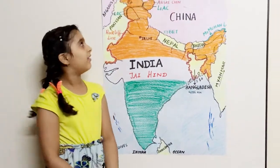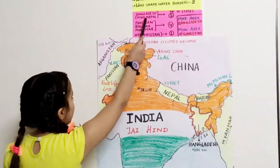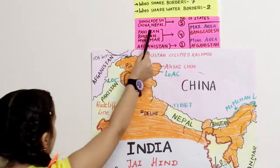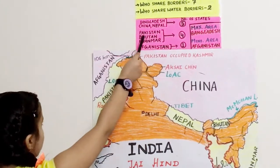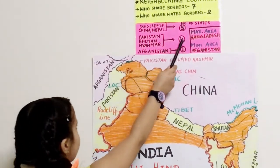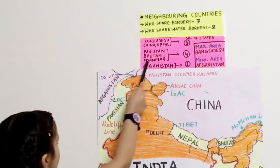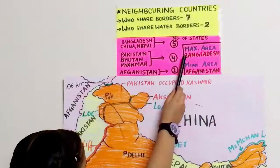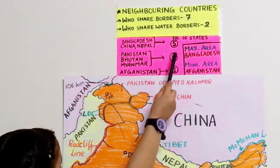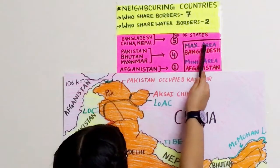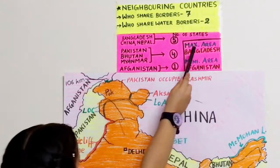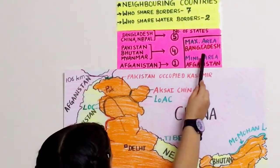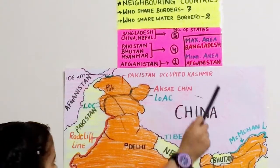So let's revise. Bangladesh, China and Nepal share borders with 5 states. Pakistan, Bhutan and Myanmar share borders with 4 states. And Afghanistan shares a border with 1 state. The country that shares the maximum border area is Bangladesh, and the country that shares the minimum border area is Afghanistan.